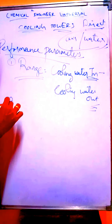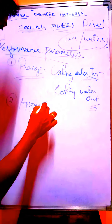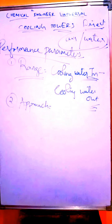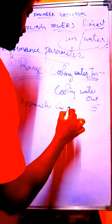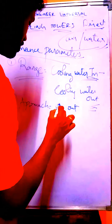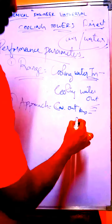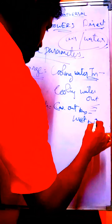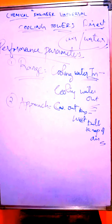The next thing is approach. I told you to record the wet bulb temperature also — this is very, very important. Approach is equal to the cooling water outlet temperature minus the wet bulb temperature of air. So, the approach is the difference between the cooling water outlet and the wet bulb temperature.